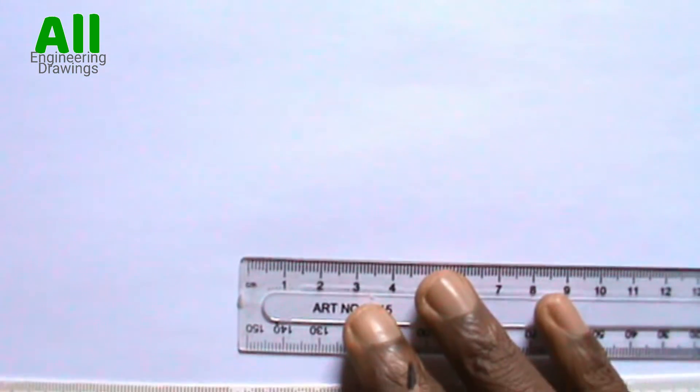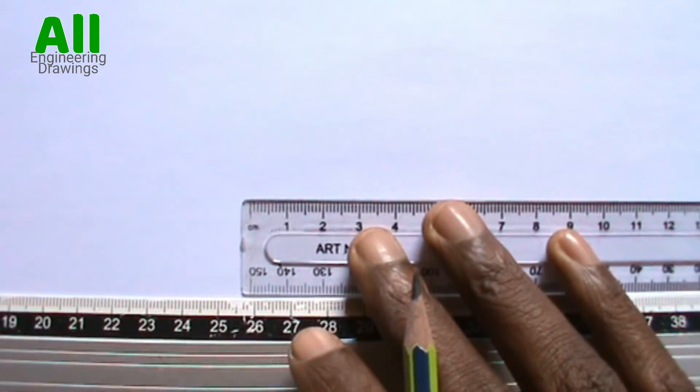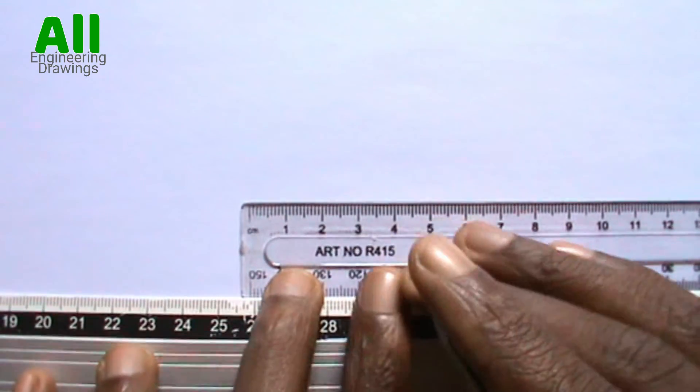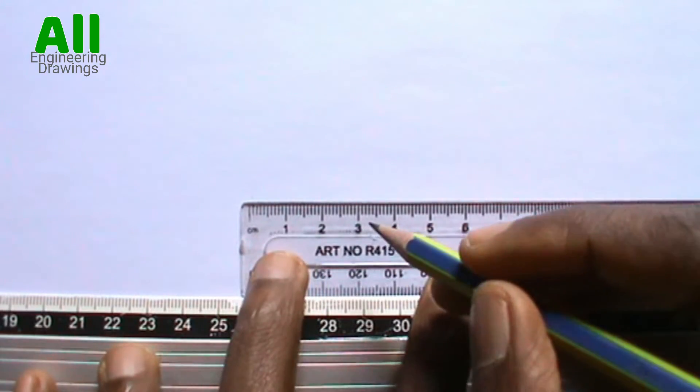To draw a thin horizontal line, you have to use your T squared to support your ruler this way. Then you can now draw the horizontal line to the required length.